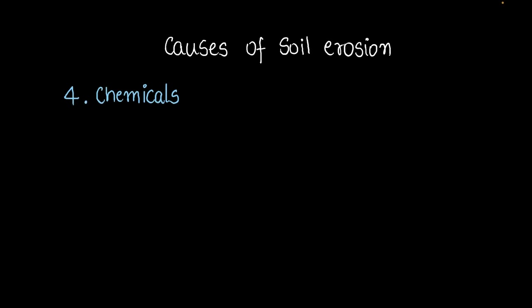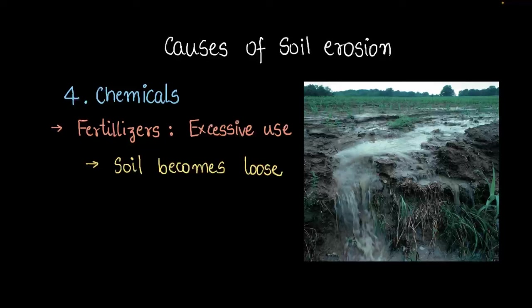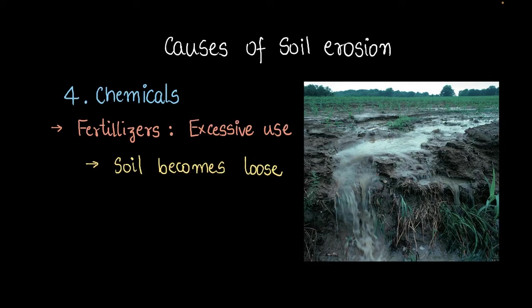Chemicals can cause soil erosion. You may ask how. Fertilizers often cause soil erosion when they're used excessively. What happens is fertilizers cause soil to become loose. And let me show you a picture. You can see this whitish muddy water. Basically the fertilizer causes the soil to become loose and then it flows down with the water, like that.